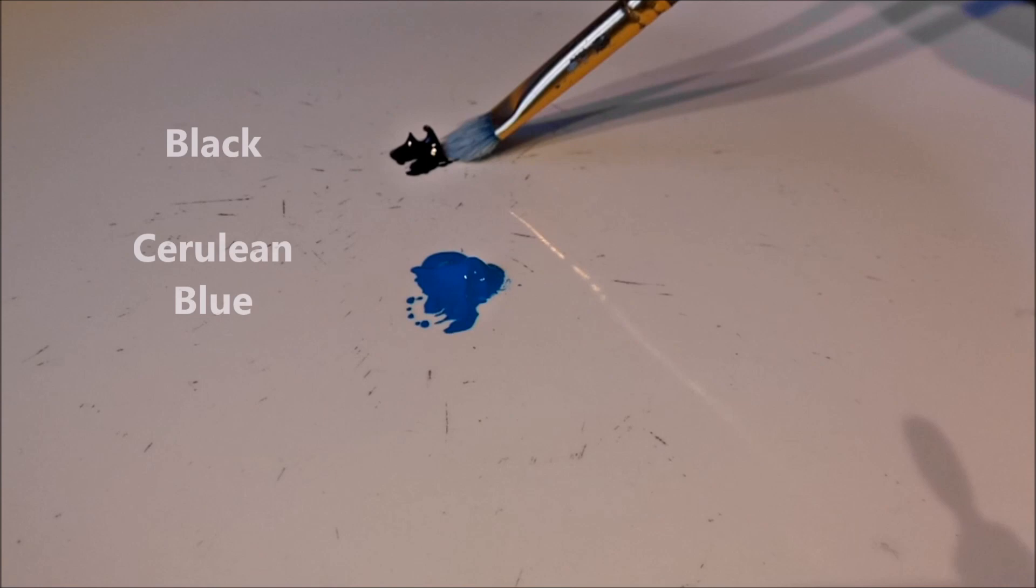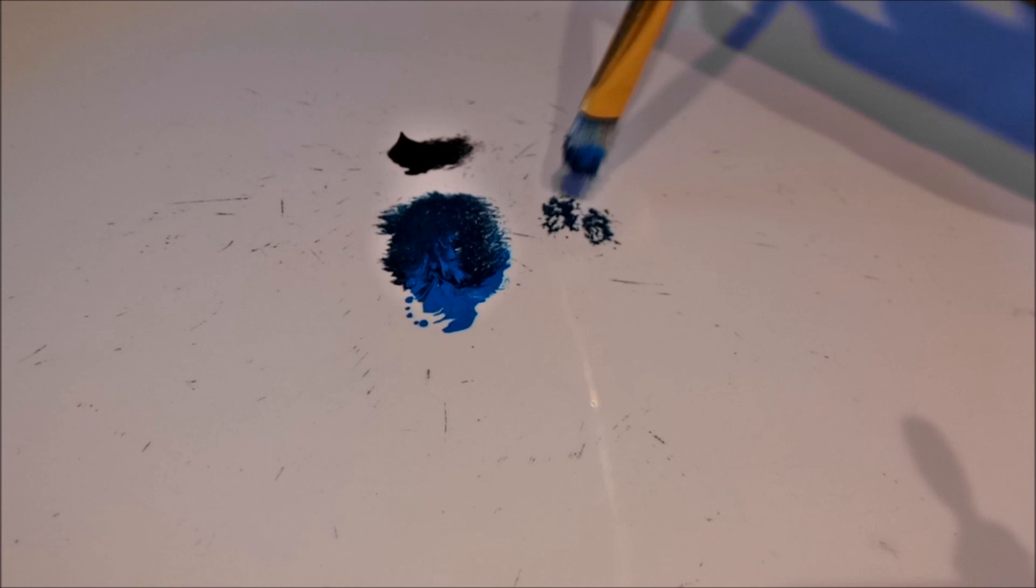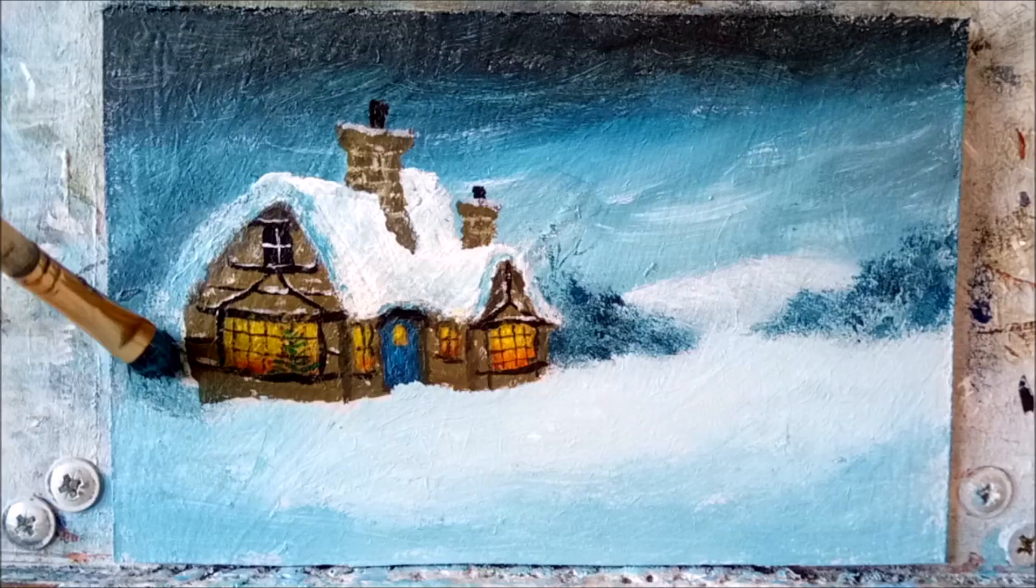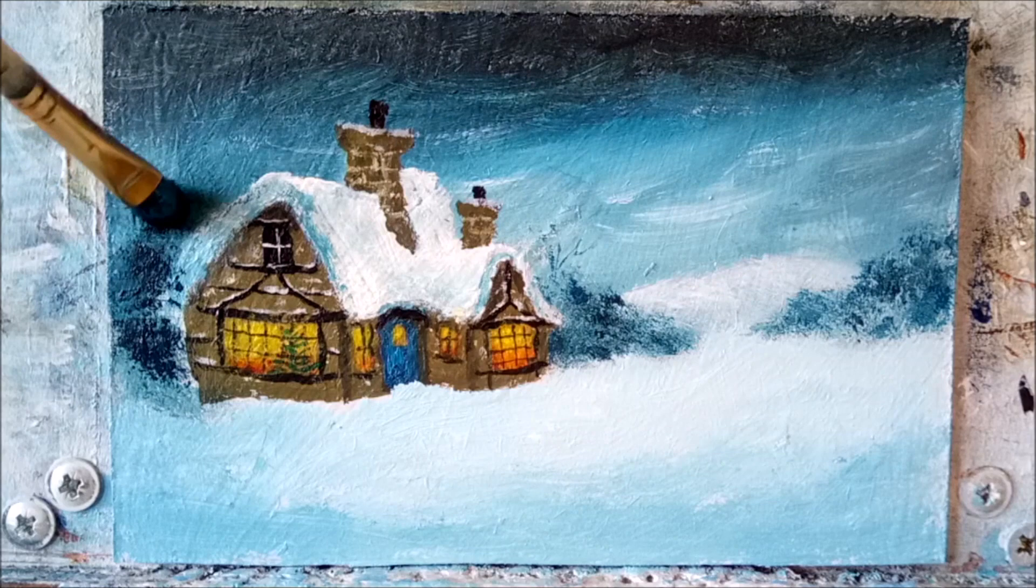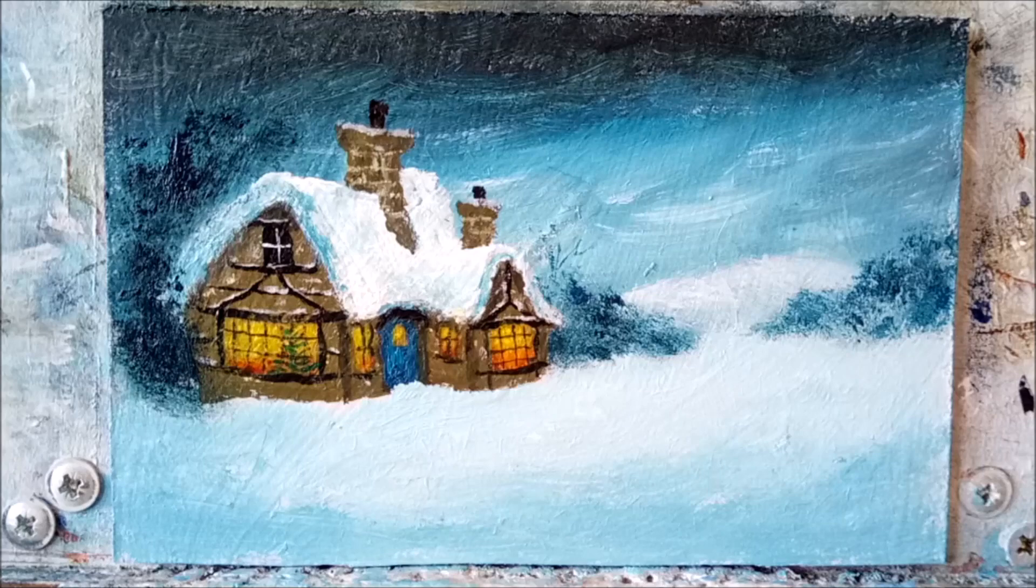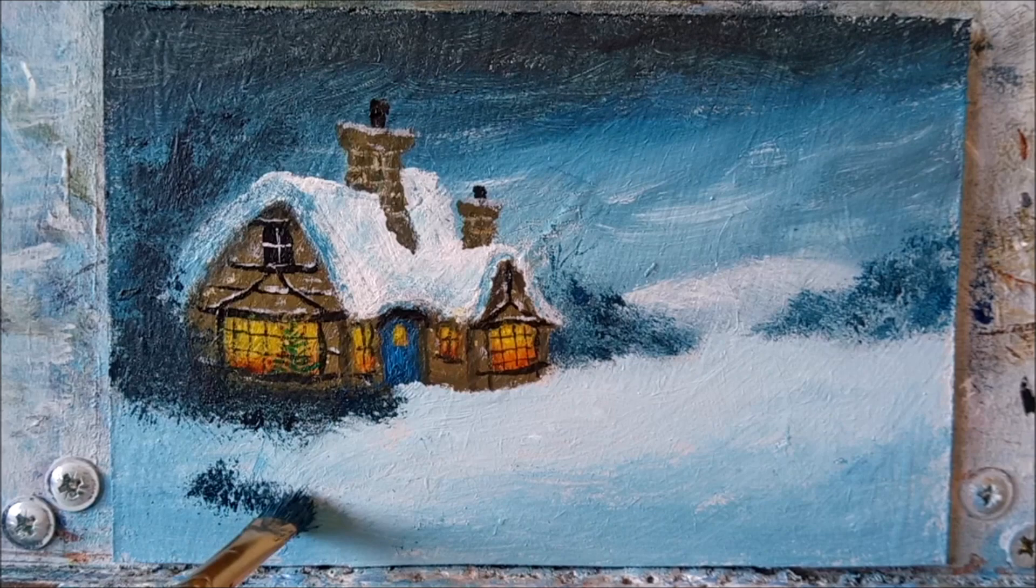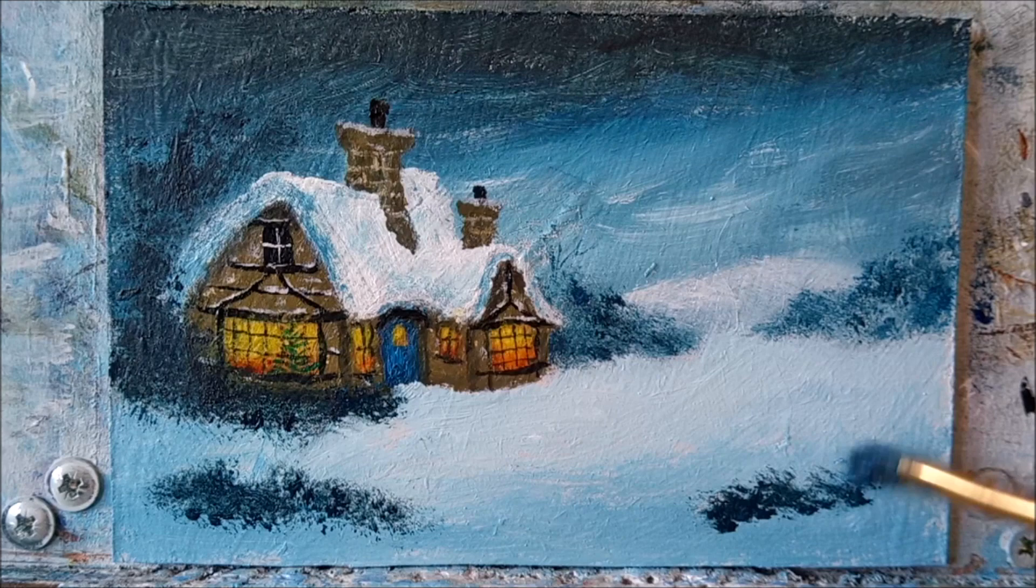Moving on to the foreground bushes and trees now, and we want a fairly dark color to work with. So mix up some cerulean blue with a fair amount of black. Again I'm gently tapping in where I want everything to go, and once you get the hang of this it's really easy. Just takes a bit of practice, that's all. There we go, there's a couple more bushes in.